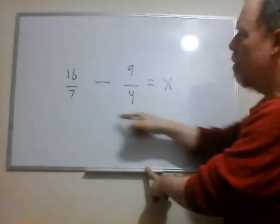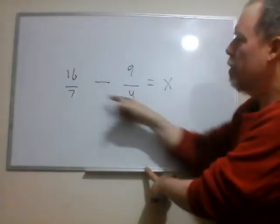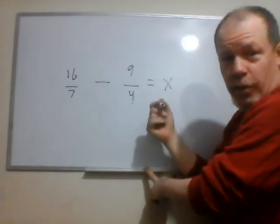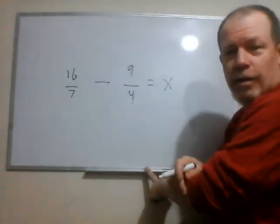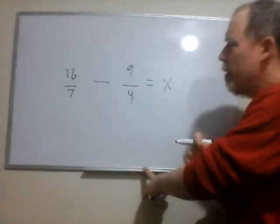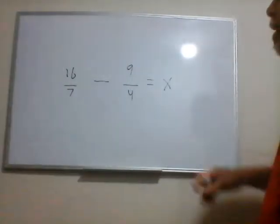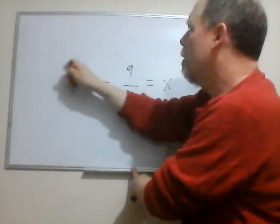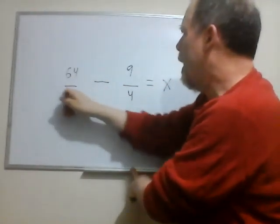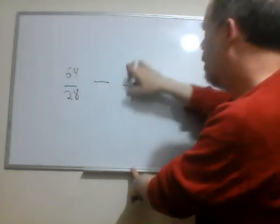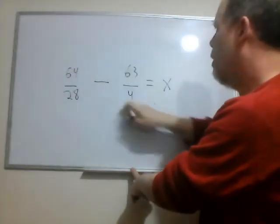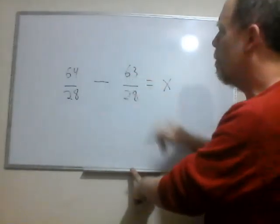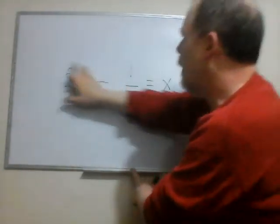You need a common denominator here, which 7 is a prime number. 4 is not a prime number, but it's an exponent of 2. It doesn't combine particularly easily with 7. The lowest common denominator you're going to get is 28. So that becomes 64 over 28. That was 63 over 28. And before you even reduce it, you can already see 64 minus 63 is 1 over 28.